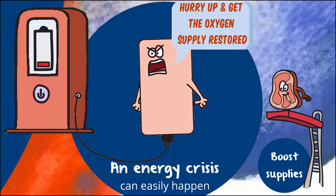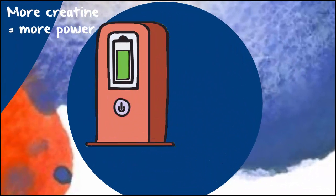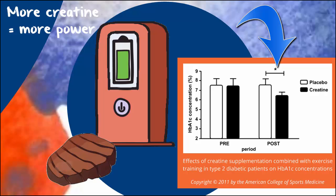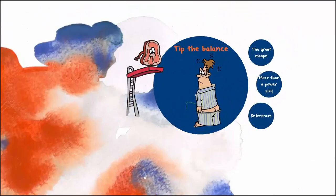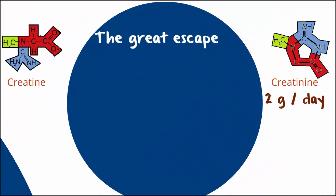So boosting creatine levels is potentially helpful. Studies have suggested creatine supplements can improve sugar control. You can do it through diet — eating meat — or by taking a creatine supplement. You don't need massive quantities, just enough to tip the balance in your favour. It's estimated you excrete about 2 grams a day. Creatine is not all that stable; it dehydrates, and when this happens, it becomes creatinine.